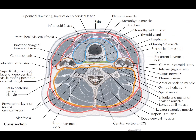The visceral fascia is made up of two components: the pretracheal fascia and the buccopharyngeal fascia. Together, these are called the visceral fascia because they cover the visceral organs of the neck, including the thyroid gland, the trachea, and the esophagus.